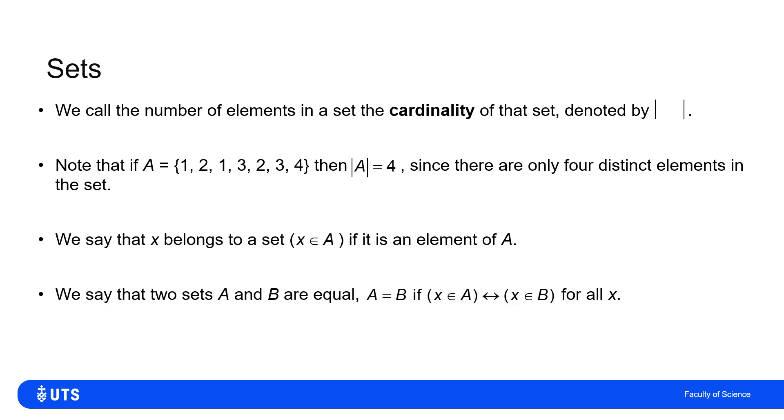We say the two sets are equal, which we would write as A equals B, if I'm saying the two sets A and B are equal, if every time I find an element x in A, I always find that element x in B as well, and the same the other way around. I've got the two way implication arrow, that knowing x is in A implies x is in B, and knowing x is in B implies x is in A for all x. So the two sets contain exactly the same elements.